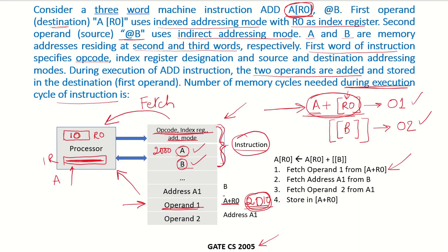Second, we need to fetch the next operand. First we check what is at address B — accessing address B is memory cycle 2. We go to memory address B, for example 2500, and read the contents. Suppose the contents at address 2500 are 2800. This is indirect addressing mode, so 2800 is the final address (call it A1) which contains the operand. We need to first fetch address A1 from B — this is another memory cycle.